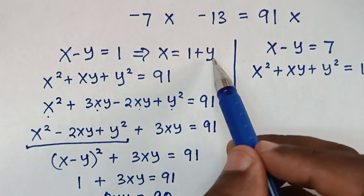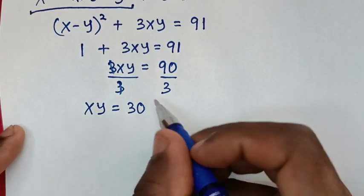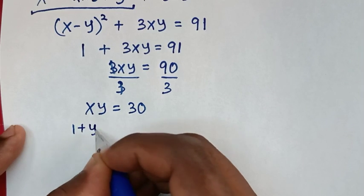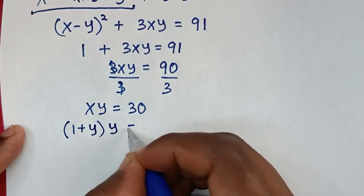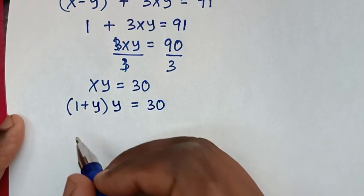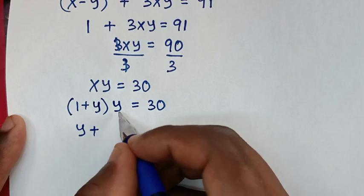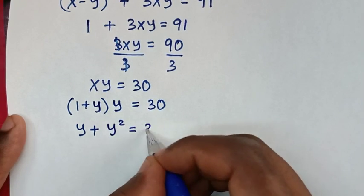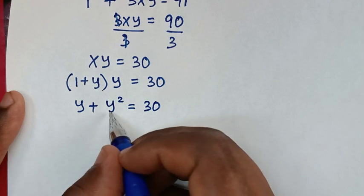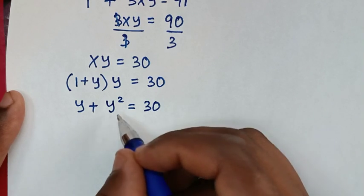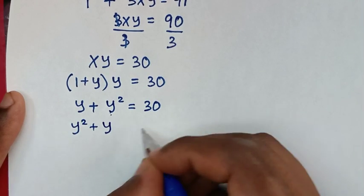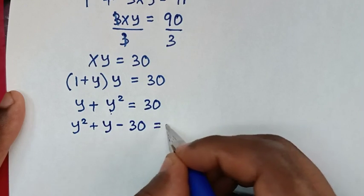From the first equation, x is equal to 1 plus y. We substitute x = 1 plus y into xy equals 30: (1 plus y) times y equals 30, which gives y plus y square equals 30. Rearranging: y square plus y minus 30 equals 0.